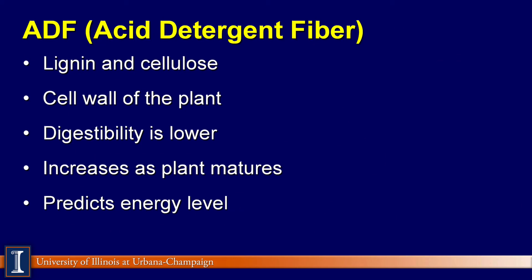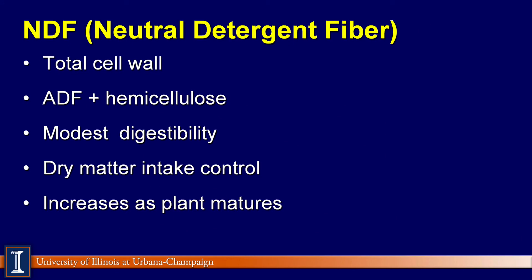A second fiber fraction related to energy is neutral detergent fiber, or NDF. This includes all the cell wall — both ADF and hemicellulose. The good news is hemicellulose can be 60 or 70% digestible, so NDF should always have a slightly higher digestibility or energy content than an ADF fraction feed. NDF controls dry matter intake, also known as the fill factor — if you have too much NDF, you just can't eat as much feed. And as with ADF, NDF increases as the plant matures.